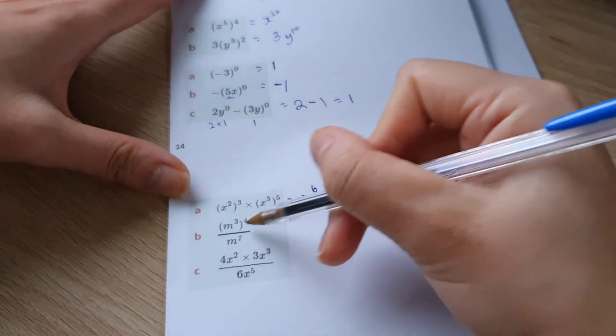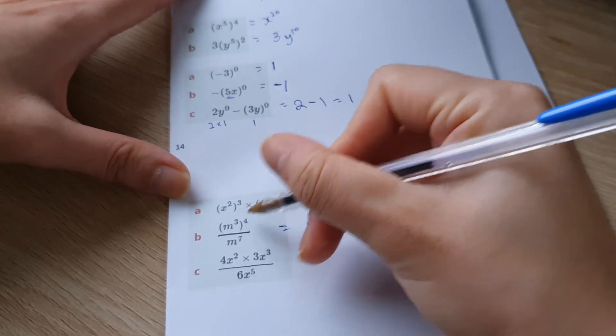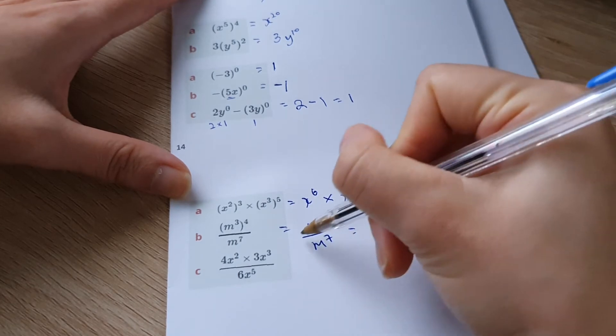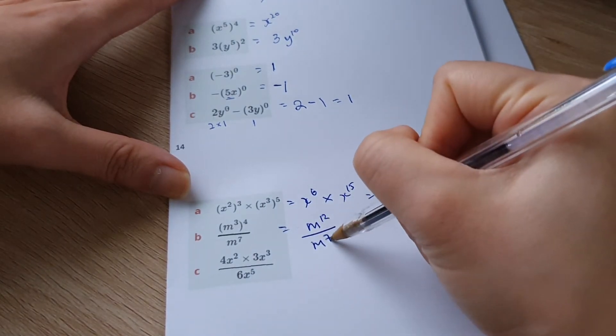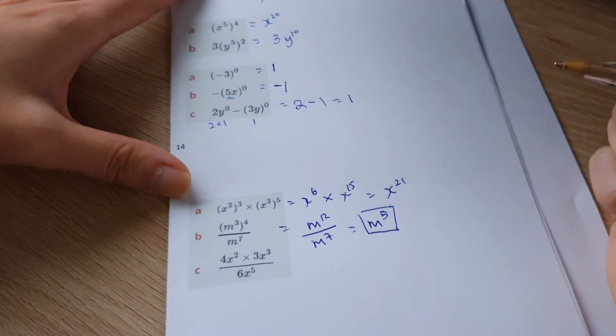Down here, we can get rid of this bracket first. So we have m at the top. Three times four is 12. Divide by m to the power of seven. Using the second law, 12 take away seven. m is going to be raised to the power of five. And that's our answer there.